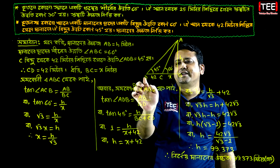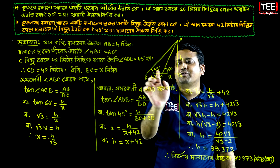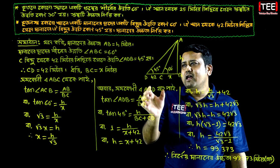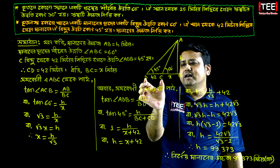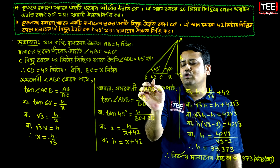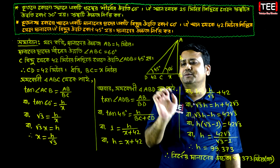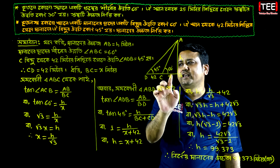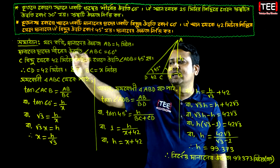Angle ADB is equal to 45 degrees. CD is equal to 42 meters, BC is equal to X meters. Let's write 6.